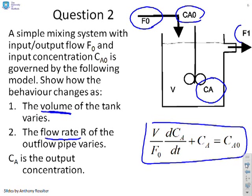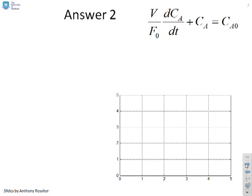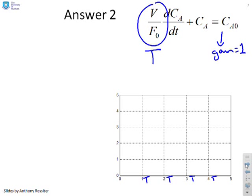The timescale at the bottom is marked in terms of time constants: 1T, 2T, 3T, 4T. Putting this model into time constant form, you'll see it's already in time constant form: T = V/F, and the gain is just 1, because it's 1 times c_A0. So this system will have a gain of 1, and the gain is independent of V and F_0.